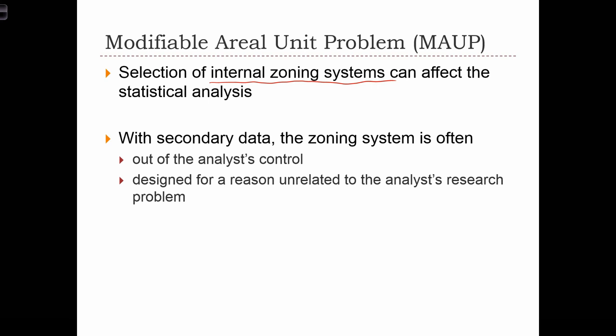I use secondary data all the time. That census data we just saw in the previous slide is secondary data. I don't get to choose how the data are given to me besides the level of aggregation. If I choose state, the way that the states are drawn on the map is already predetermined. If I choose counties, the counties exist and the data is going to be given to me at the county level. I don't have a choice to re-aggregate the data using some other arbitrary zoning system.